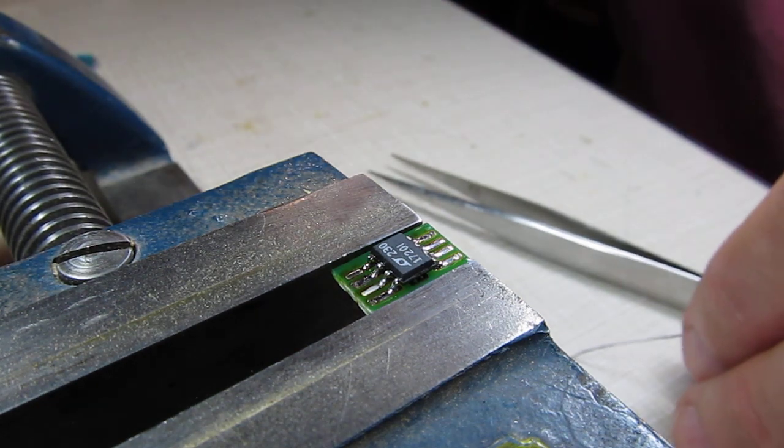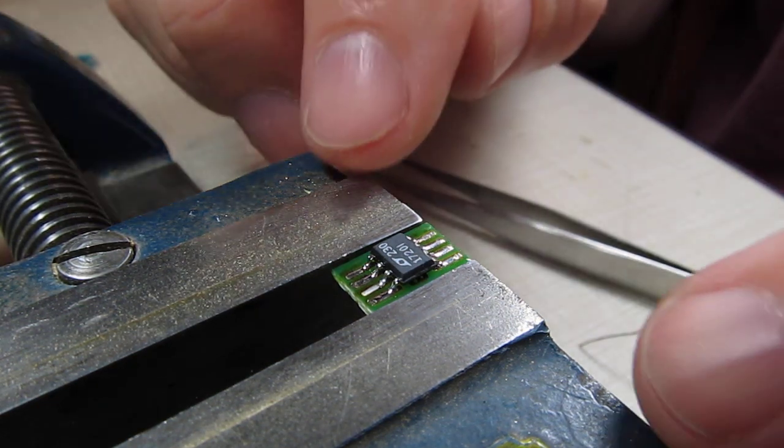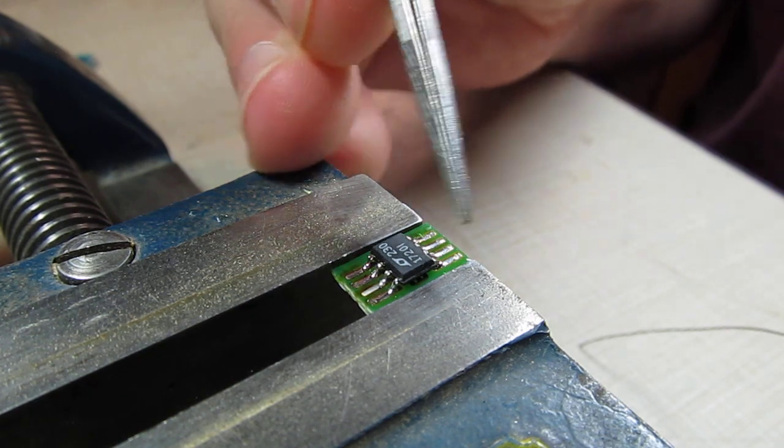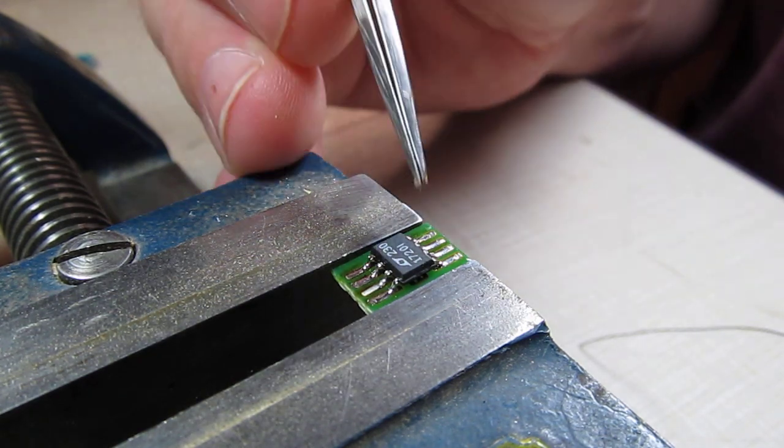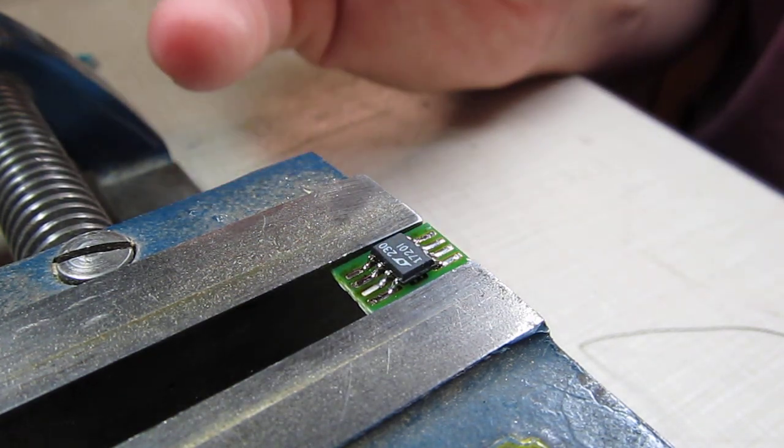So that's the basic technique: tack a corner in place to get it fixed to where you want it to be so it doesn't move, tack an opposite corner so it doesn't move, then go around and make all of your connections.